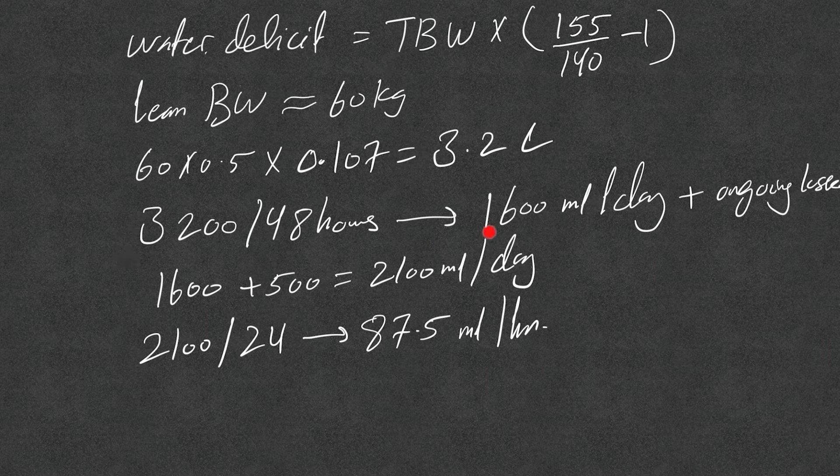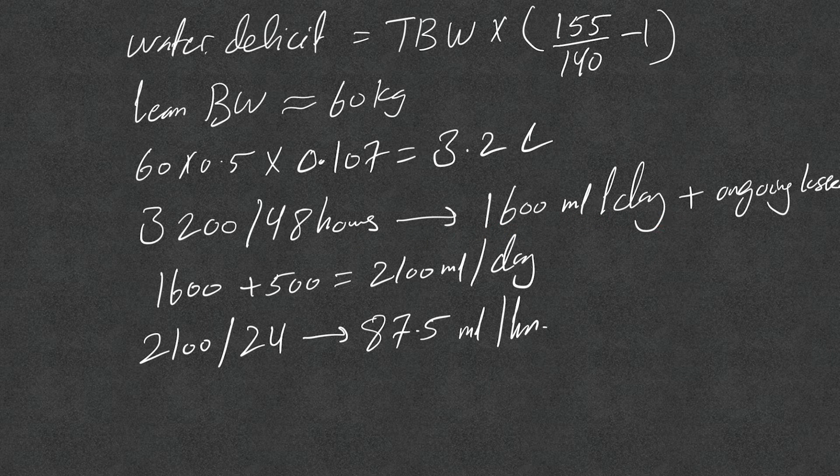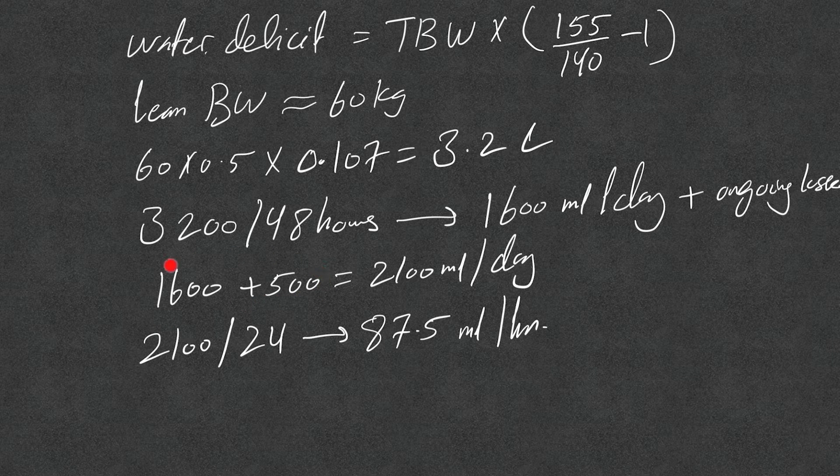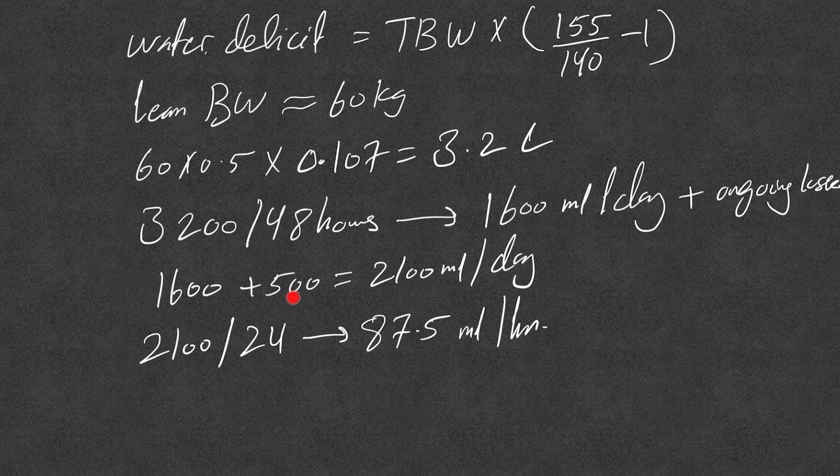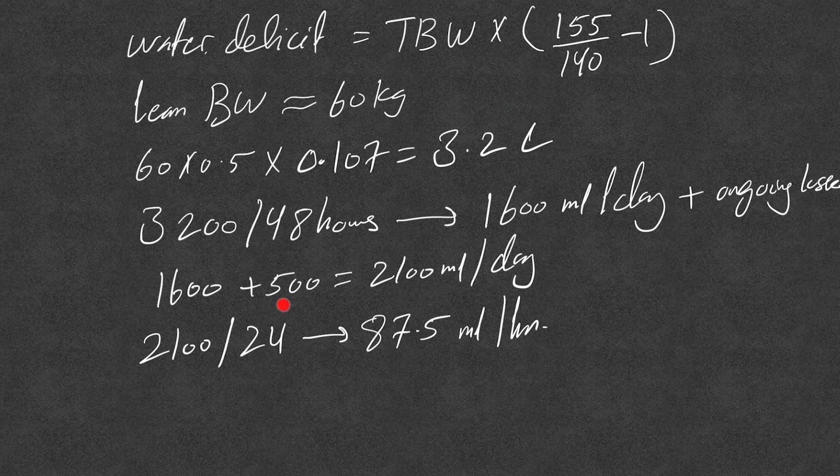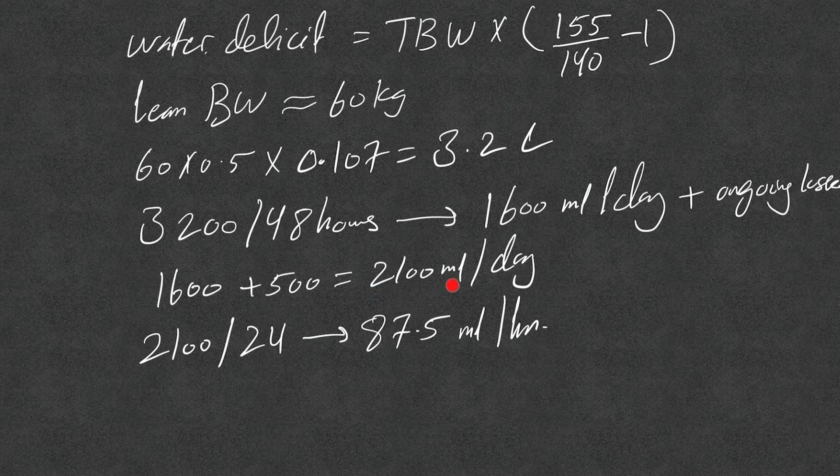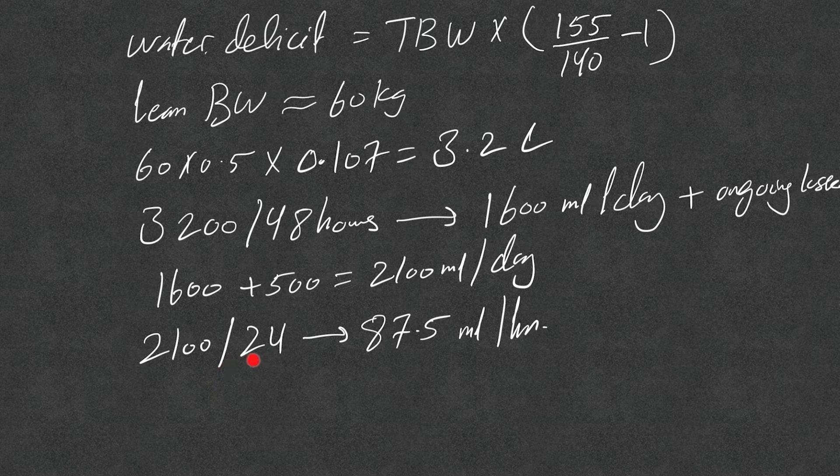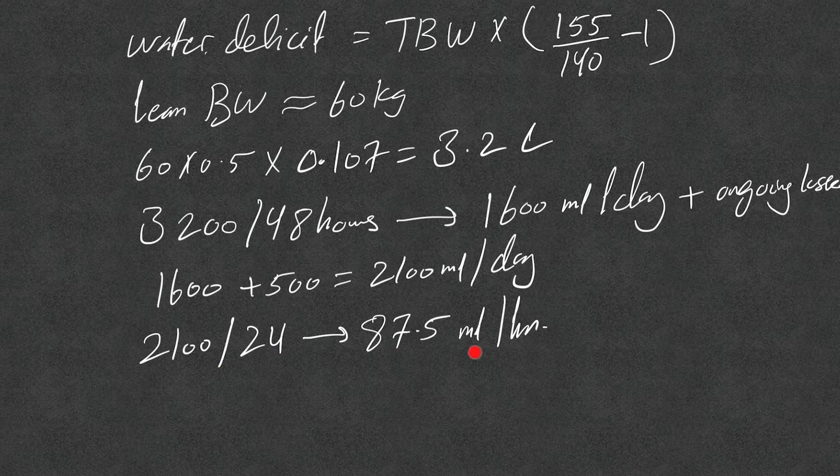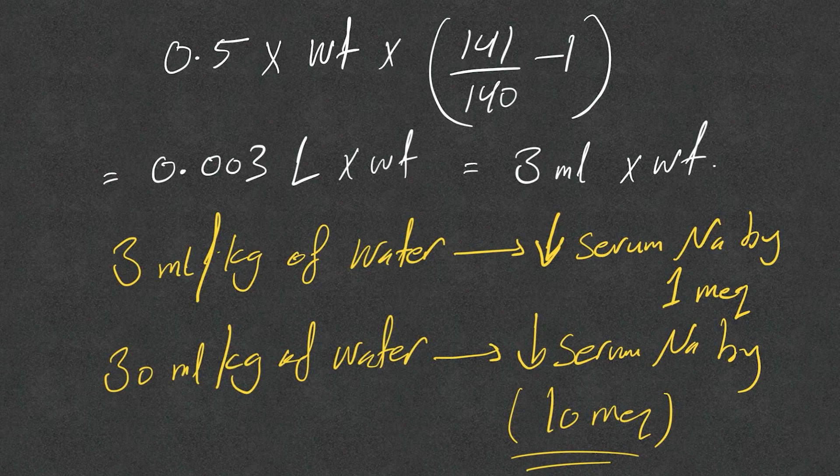Because it's more than 10 milliequivalents—we're talking about 15 milliequivalents—then I need to drop it over two days, over 48 hours. That means 1600 ml per day plus ongoing losses for that day. So 1600 plus 500, those ongoing losses, because there is only insensible losses, there's no sensible losses with this patient. Then it's 2100 ml per day, 2100 divided by 24, that means 87.5 ml per hour.